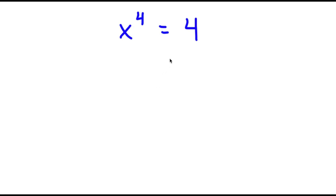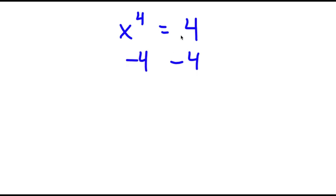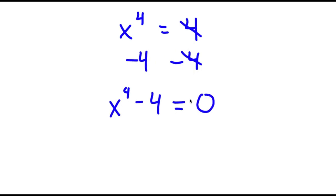In this problem, I have x to the power of 4 is equal to 4. I'm going to first start by subtracting 4 on both sides. These two cancel out, and now I have x to the power of 4 minus 4 is equal to 0.